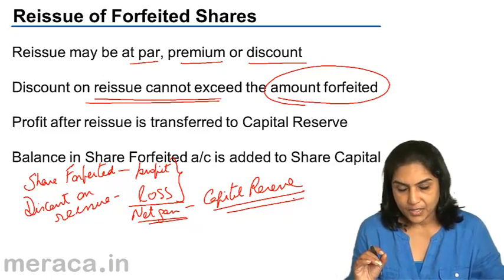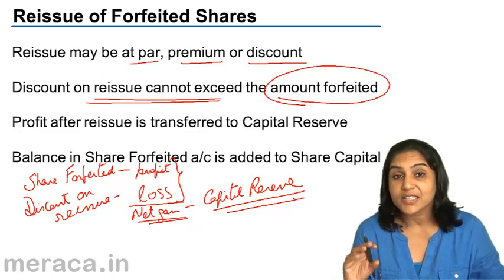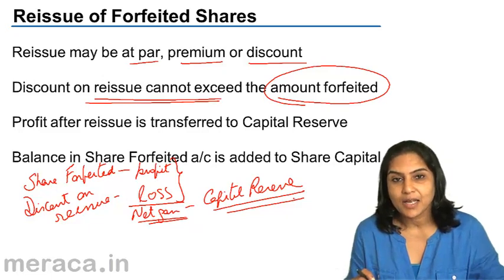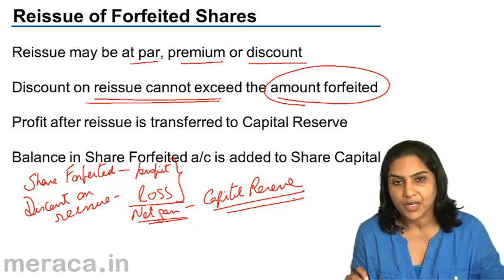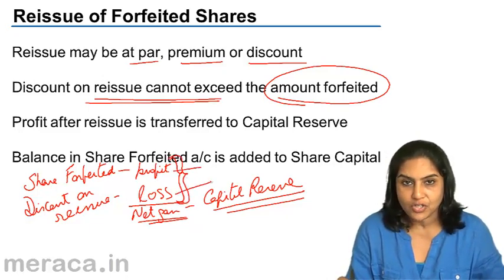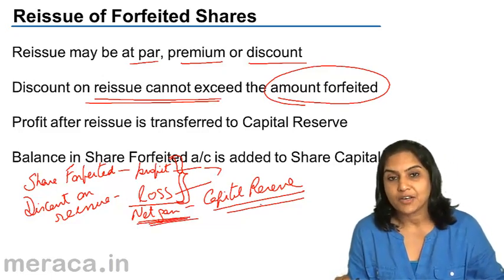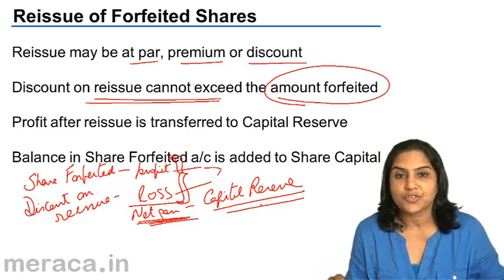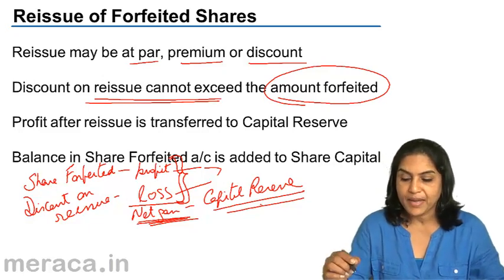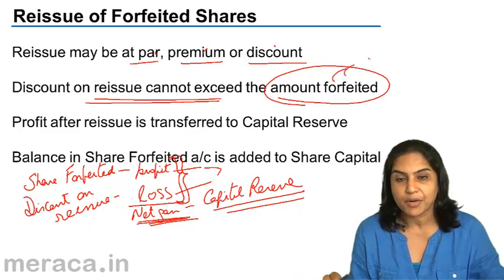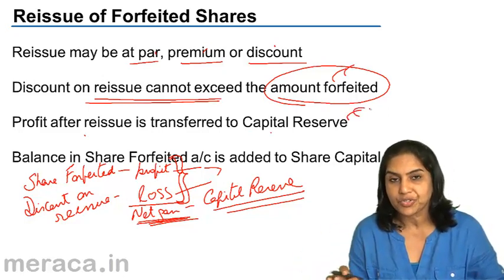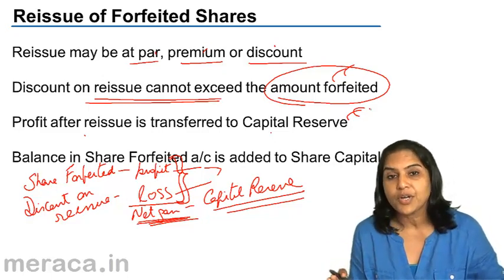The net gain: when shares are reissued at a discount, the discount represents a loss, and such loss cannot exceed the balance in the shares forfeited account — it cannot exceed the profit made on forfeiture. The net gain from the shares forfeited account, after deducting the loss on reissue, is transferred to the capital reserve account. These are, in broad terms, the provisions of the Companies Act with respect to reissue of forfeited shares. Reissue may be at par, premium, or discount; however, the discount cannot exceed the amount forfeited. Once forfeited shares are reissued, there should be no further balance in the shares forfeited account — such balance is transferred to the capital reserve account.